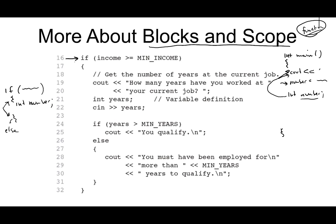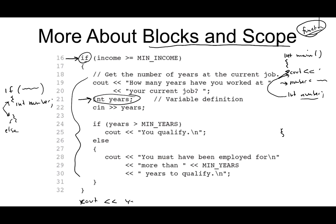So for example, if income is greater than or equal to min income, then we get the number of years at the current job — cout asking how many years, and then int years is defined inside the if statement. If years is greater than min years, you qualify; otherwise a message says you must have been employed for more than min years to qualify. This years variable is only available inside the block of this if statement. If we try to use it after exiting the if statement, it causes a compilation error because the variable is gone out of scope.